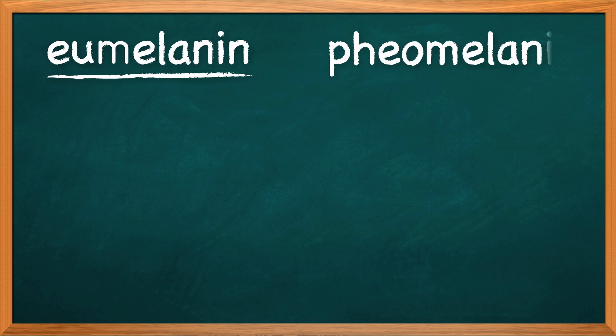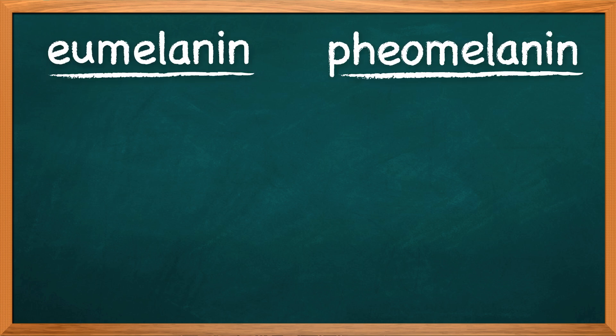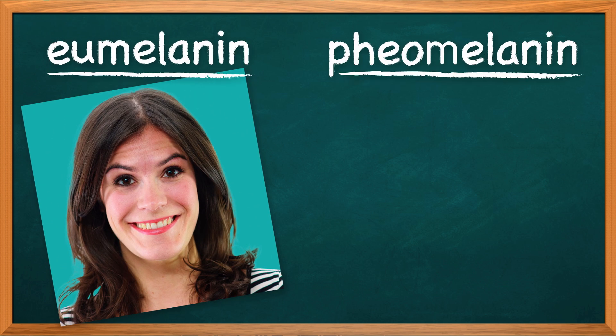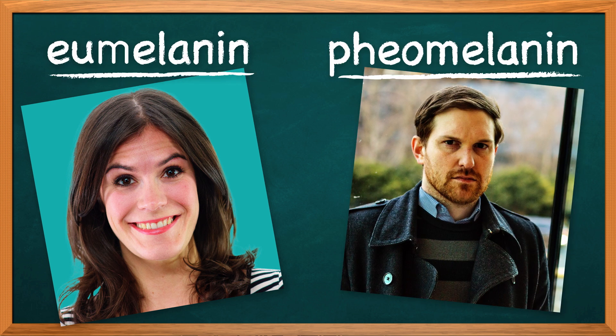Eumelanin and pheomelanin. Eumelanin is a dark pigment that gives hair a brown or black color. Pheomelanin is a lighter pigment that gives hair a red, orange, or yellowish color. Both of these are present in varying degrees, so a person might have a little of each, or a lot of one and almost none of the other. Someone with black or dark brown hair probably has a lot of eumelanin, a redhead has a lot of pheomelanin, and blondes don't have very much of either.